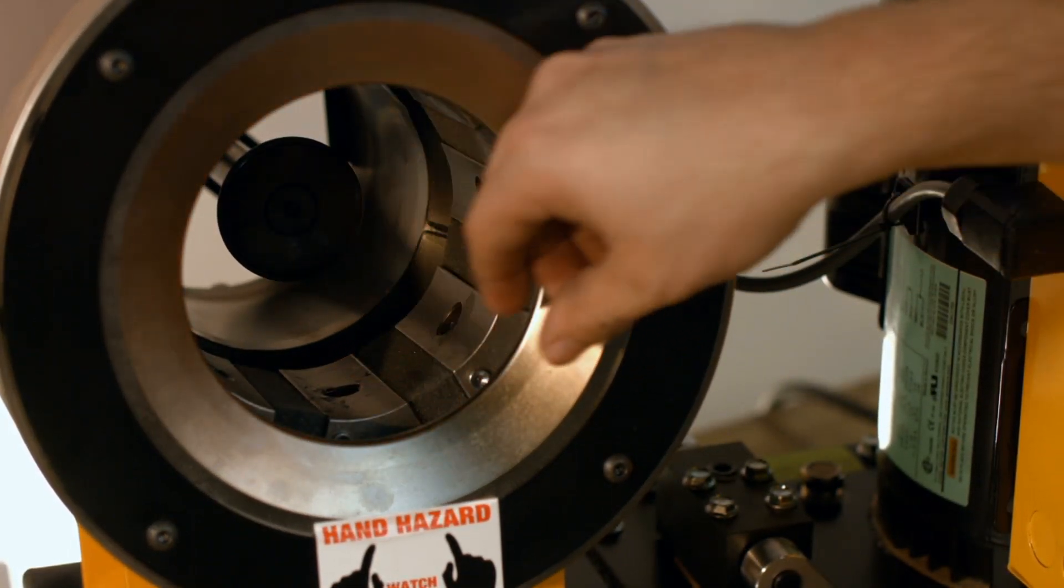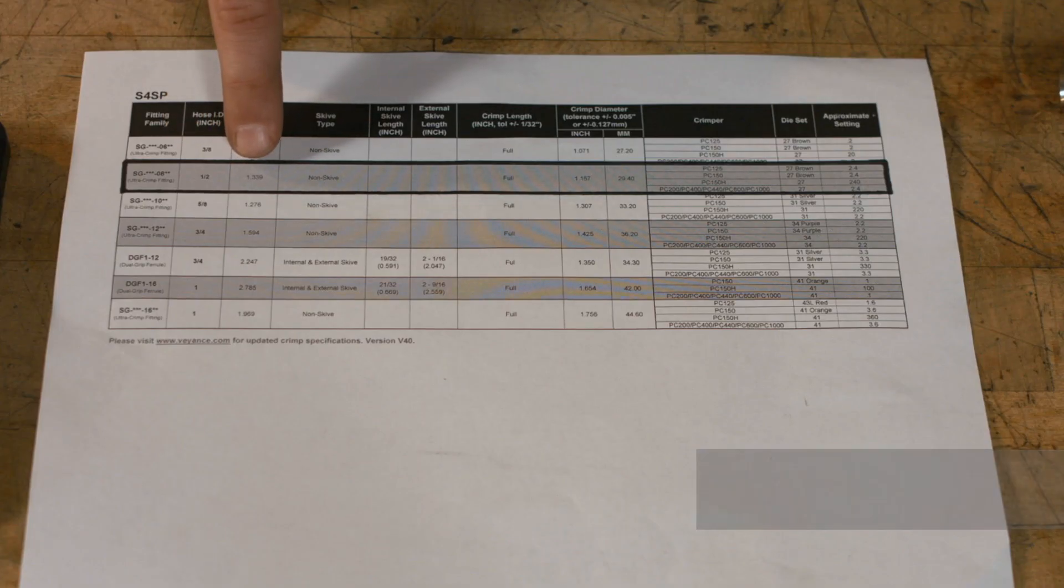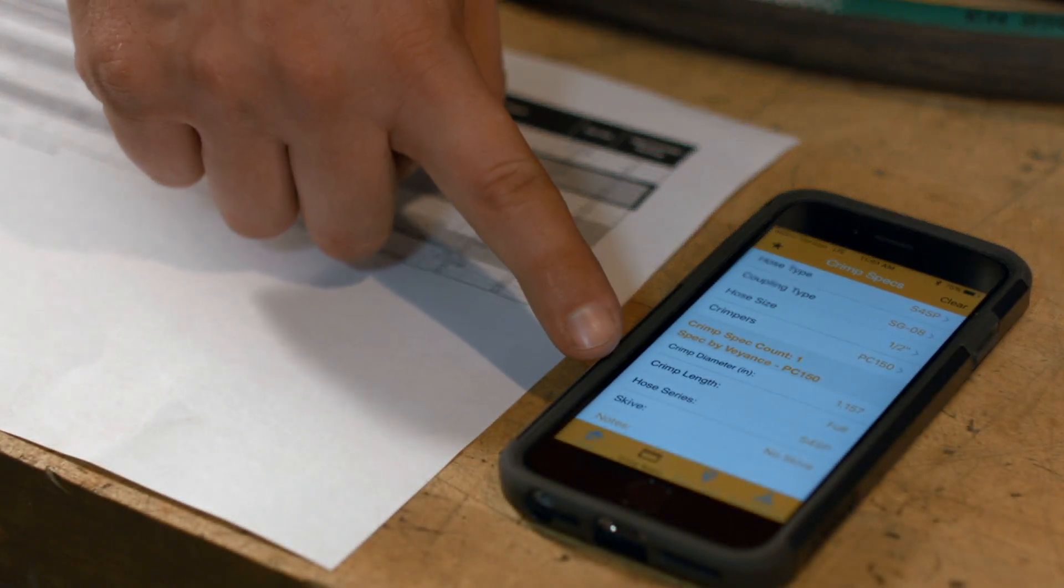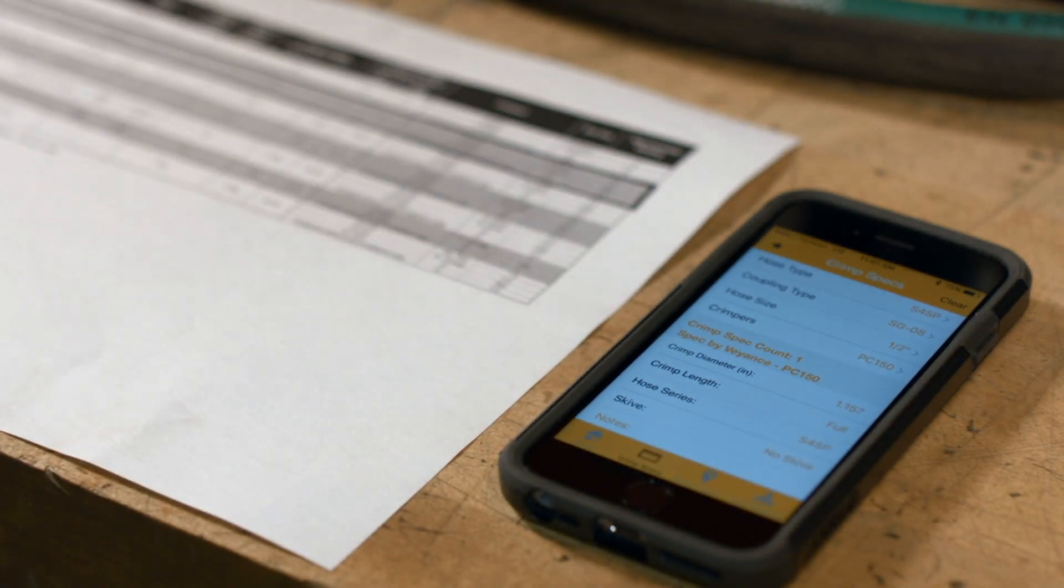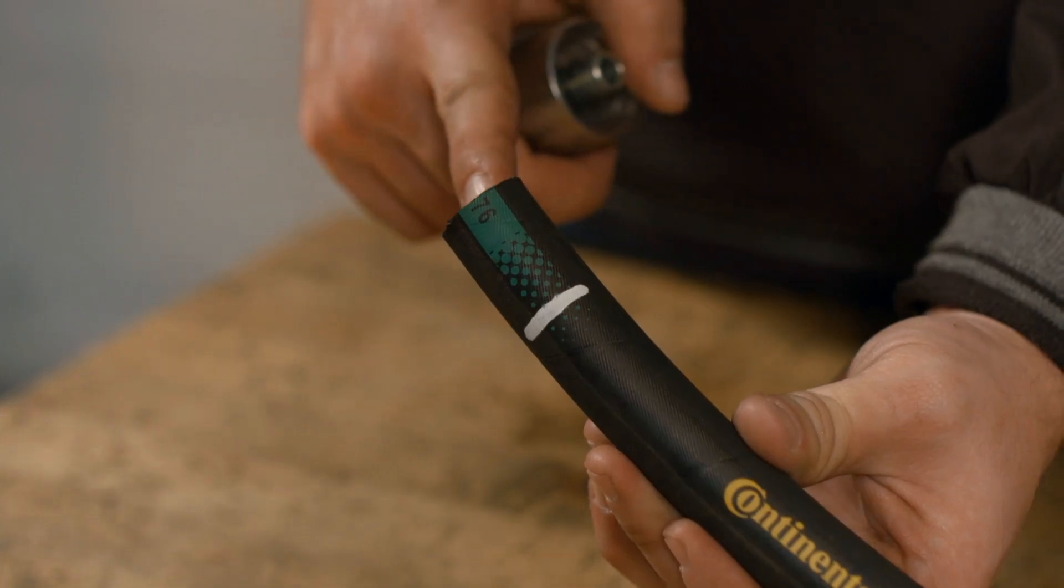Prior to crimping the hose, it is important to verify the insertion length. This number can be found in your crimp specification chart or by using the ContiTech crimp app, which also provides information on die set selection. Ensure the hose is cut cleanly and mark the correct insertion depth using a caliper.